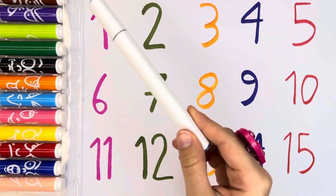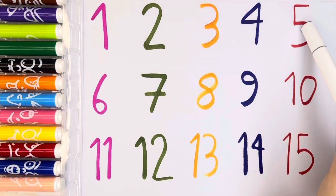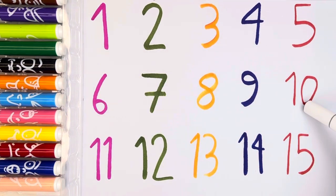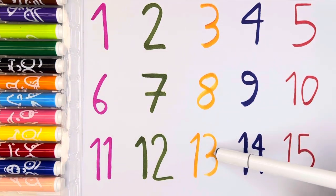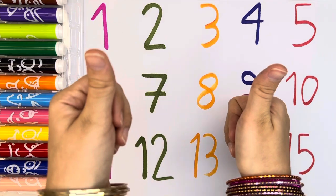Okay guys, now let's count. One, two, three, four, five, six, seven, eight, nine, ten, eleven, twelve, thirteen, fourteen, fifteen. Perfect.